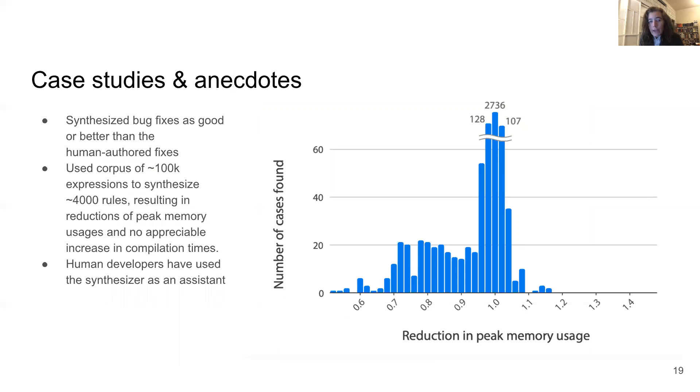I'll highlight a few case studies from our evaluation showing that the synthesis pipeline was actually helpful. First, we went through the Halide issue tracker. We found five bug reports that involved changes to the term rewriting system. We took input expressions from the bug reports, and we synthesized patches that were as good or better than the human authored fixes. This obviously represents a saving in human effort. And the patches are also proven to be correct. So we don't have to worry about introducing any new errors.